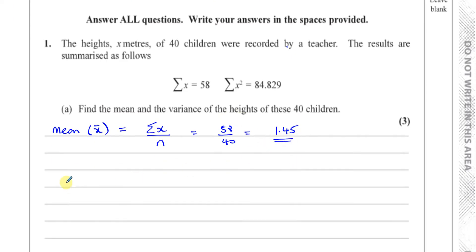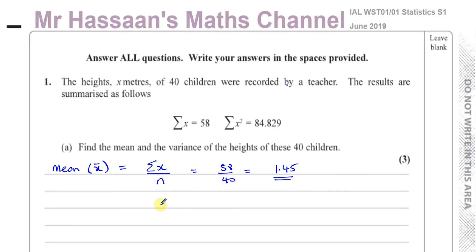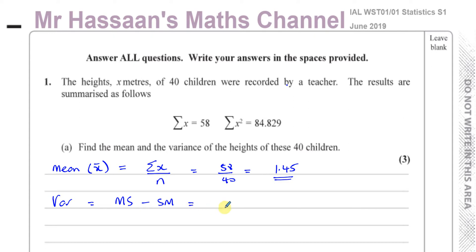Now we've got to find the variance — not the standard deviation, the variance. The variance is basically the mean of the squares minus the square of the mean. That's a nice little phrase to remember. If it were standard deviation it would be the square root of this, but this is variance.